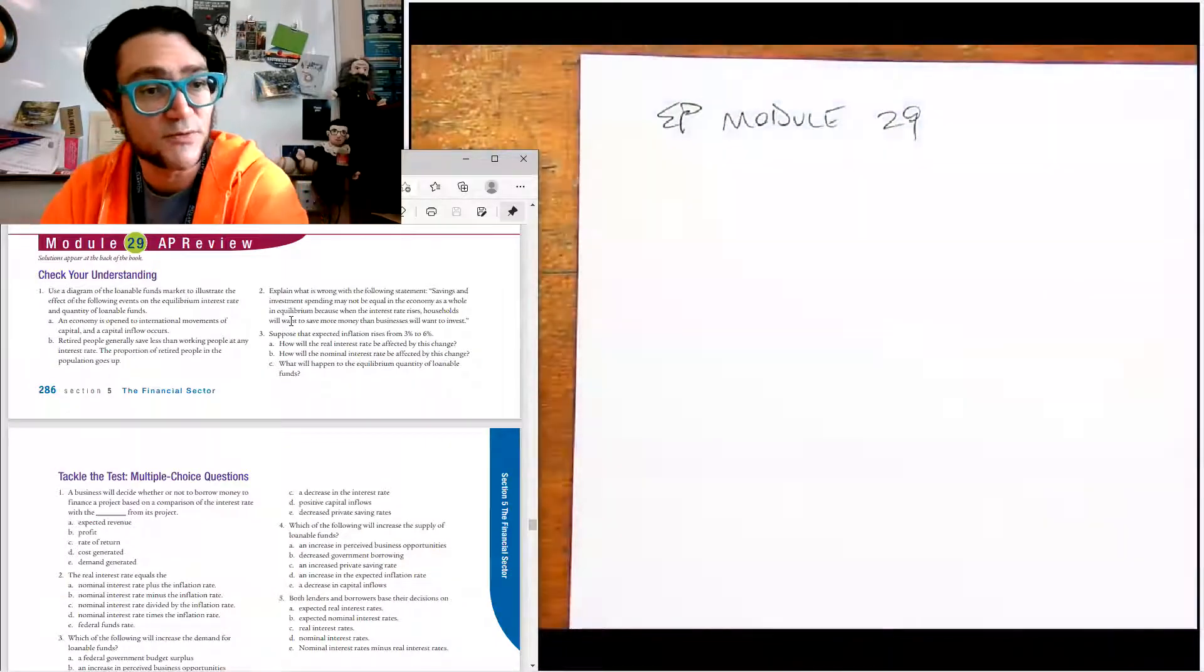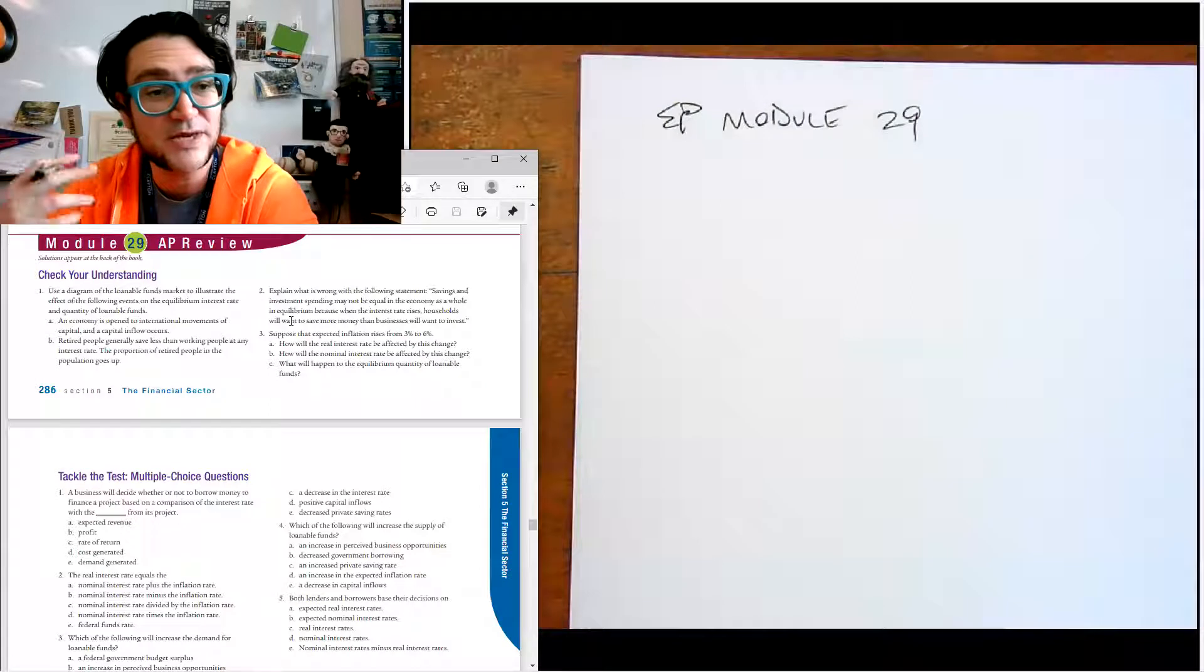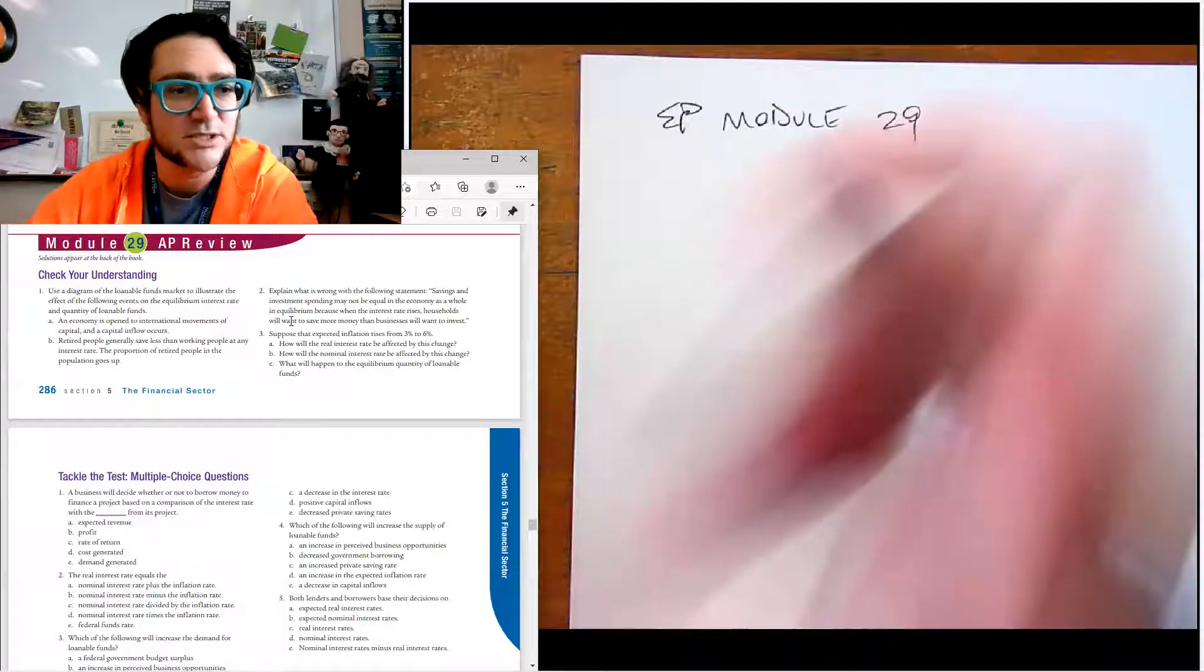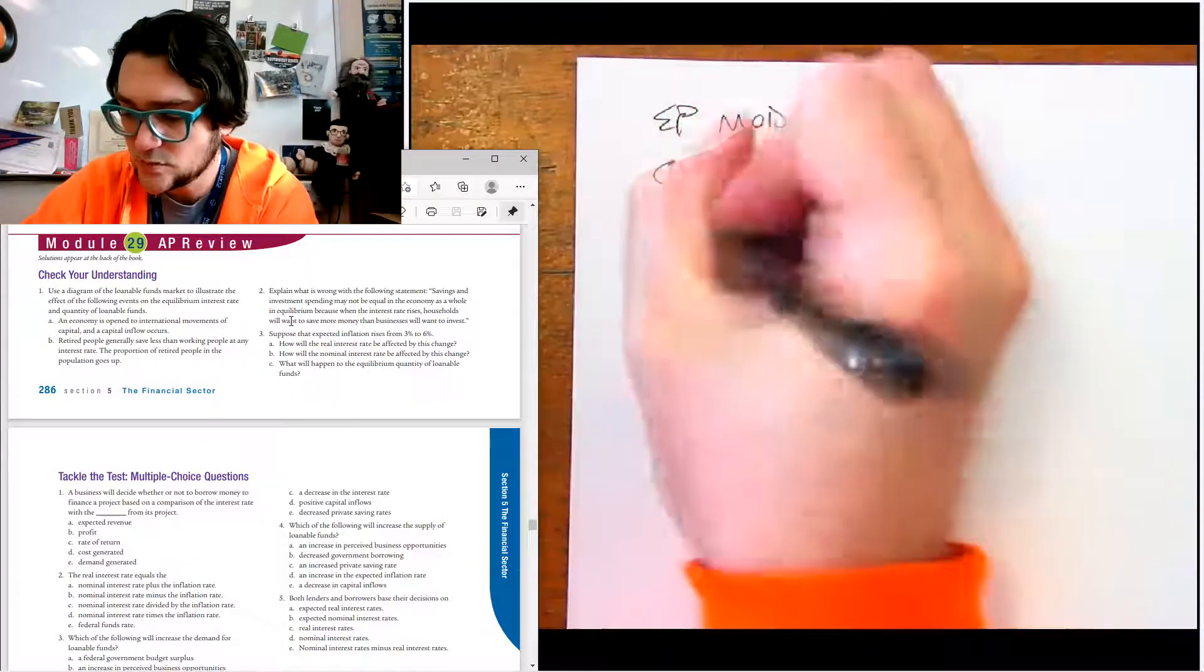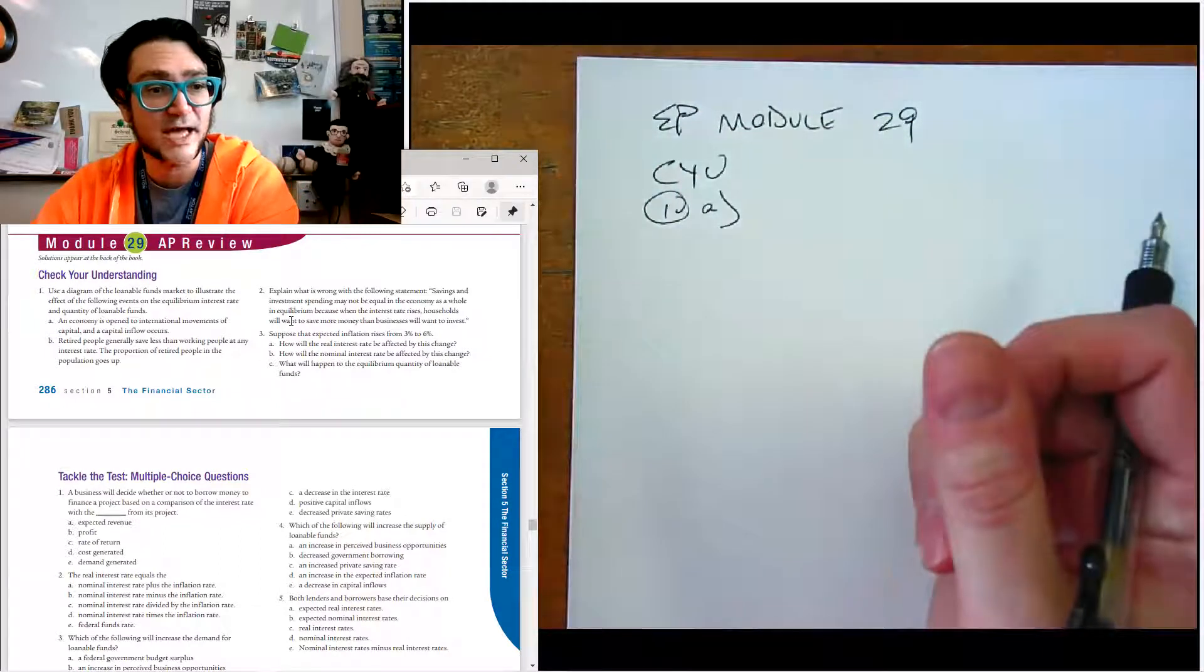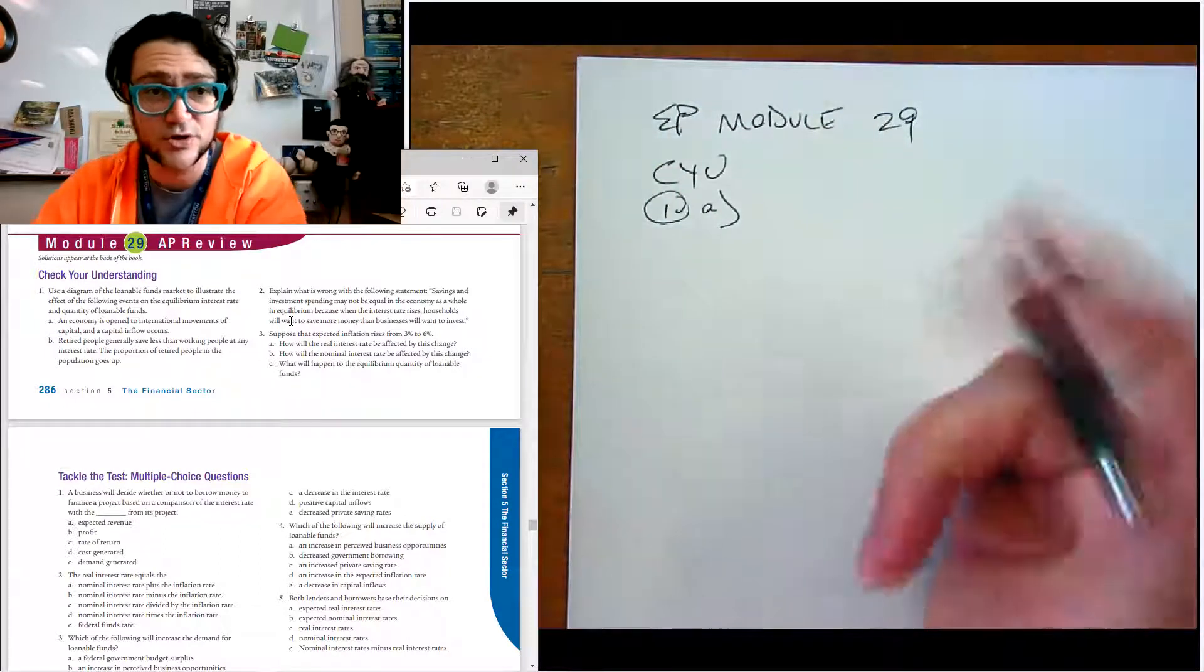It says use the diagram of the loanable funds market to illustrate the effect of the following on the equilibrium interest rate and quantity of loanable funds. So in other words, use a quick little sketch and see what happens. So 1A, let's see here, says an economy is opened up to the international movements of capital and a capital inflow occurs.